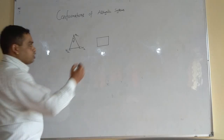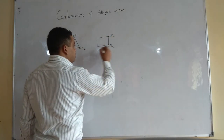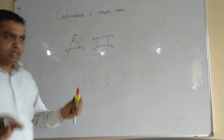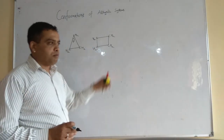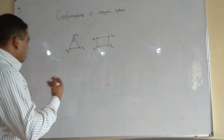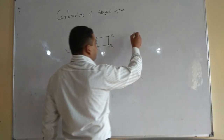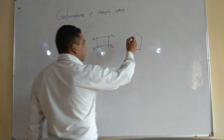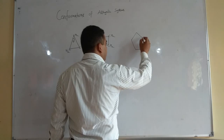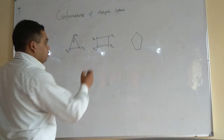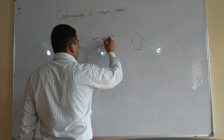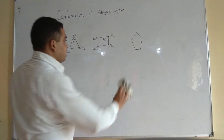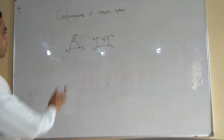Moving to cyclobutane, you have CH₂–CH₂–CH₂–CH₂ at all four corners, shown as a flat planar structure. Then moving to the next system, cyclopentane — again CH₂ groups — and its bond angle would be 90 degrees.